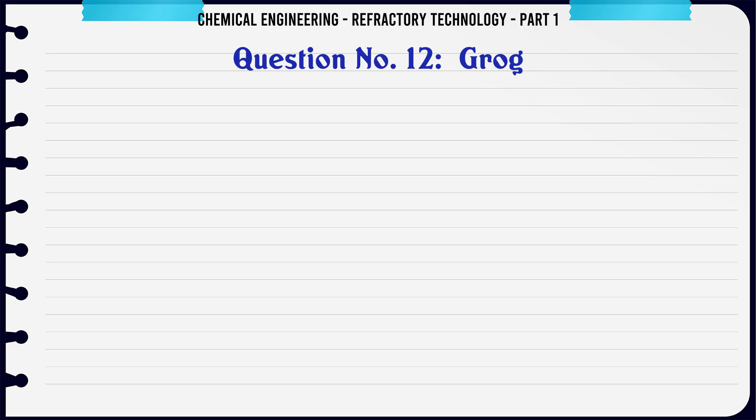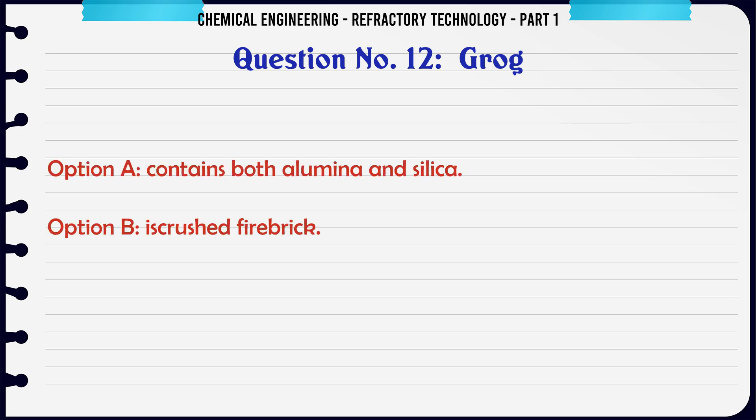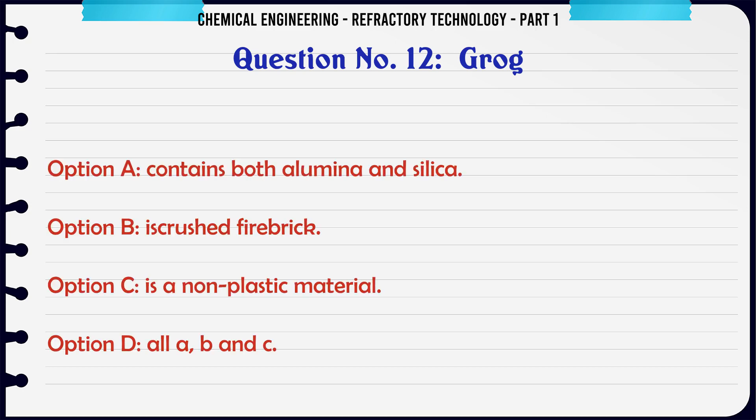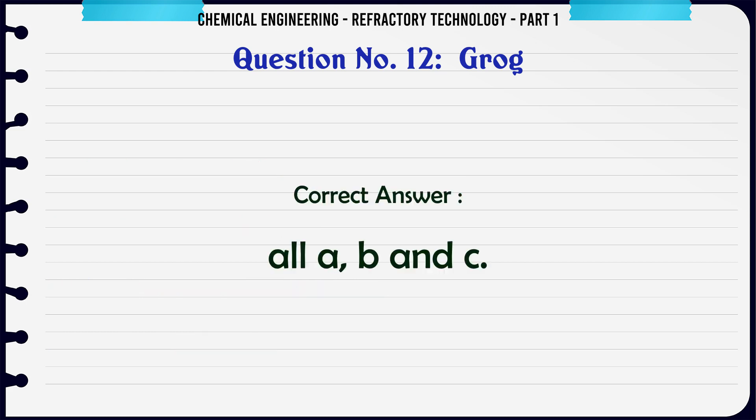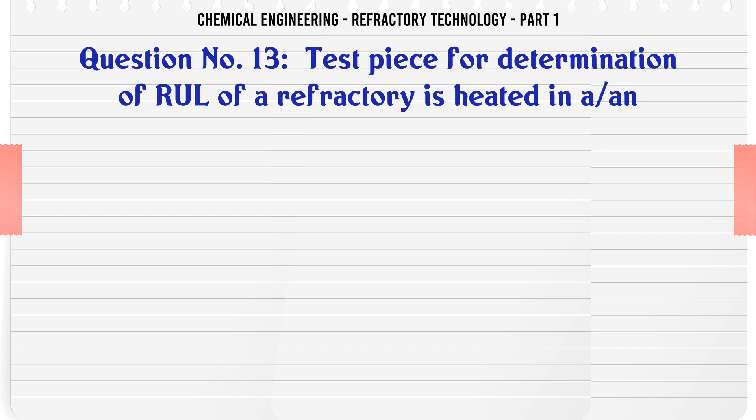Grog: A. Contains both alumina and silica, B. Is crushed fire brick, C. Is a non-plastic material, D. All A, B and C. The correct answer is All A, B and C.